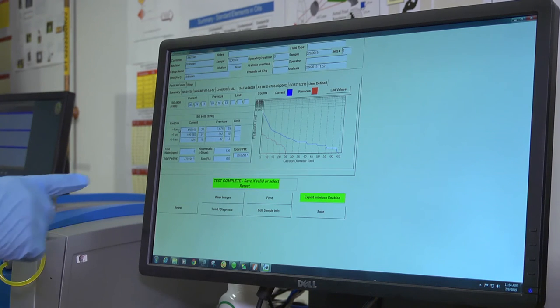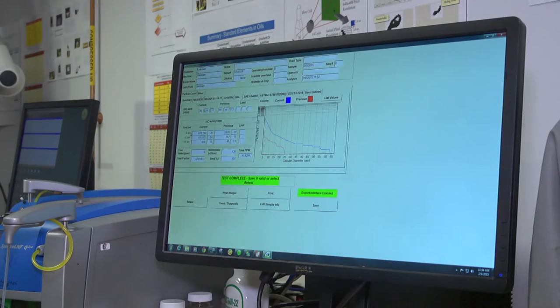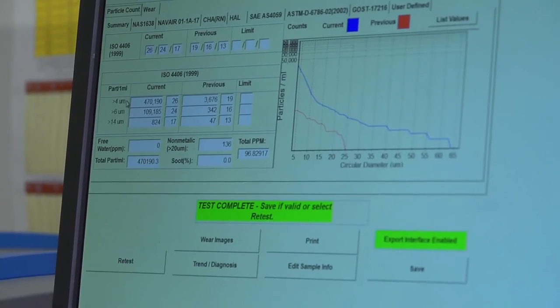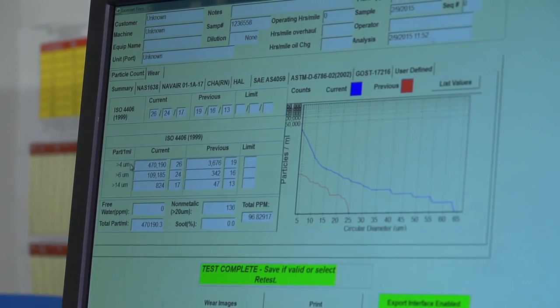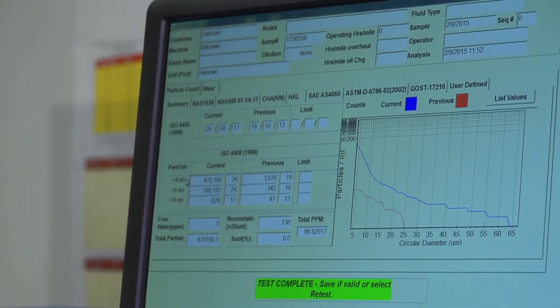So that's the particle count results in terms of the basic ISO codes. There's also a measurement of non-metallics. It showed that there's 136 particles that are non-metallic greater than 20 microns. That's a parameter that comes out of the LNF wear image capability.